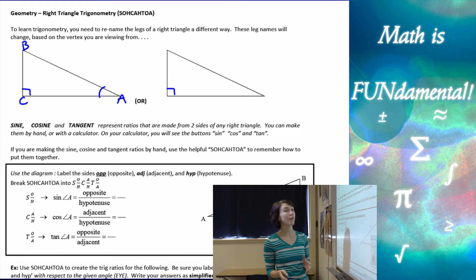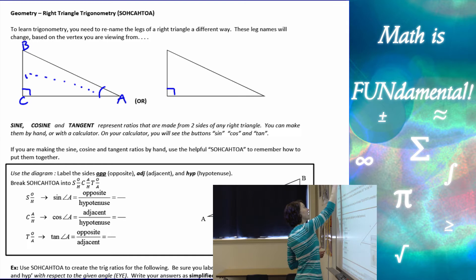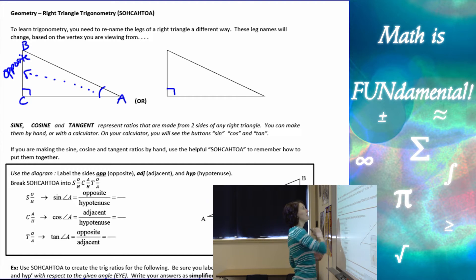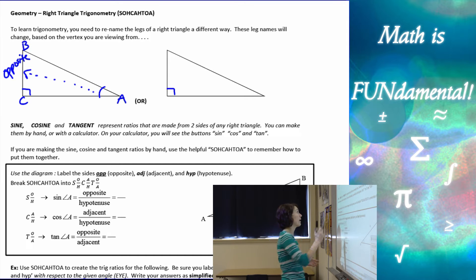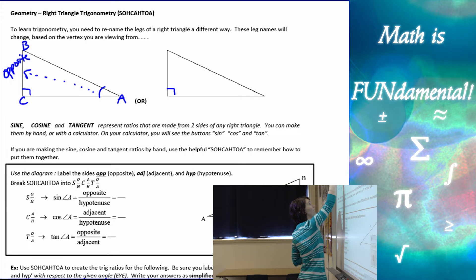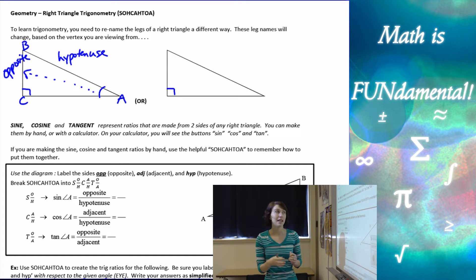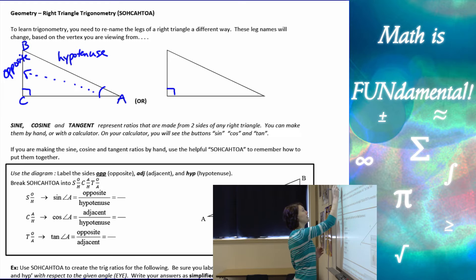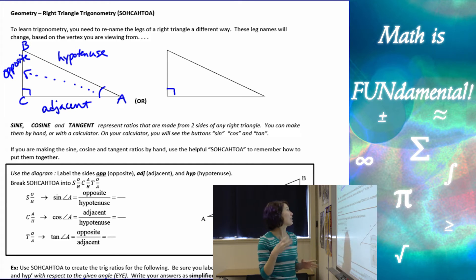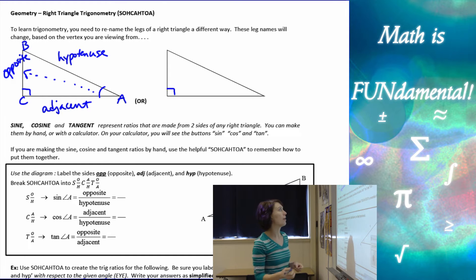If we're looking from angle A, the side across from it is what we're going to call the opposite side — it's opposite from our angle of reference. The right angle is always across from the hypotenuse, so that doesn't change. And then the other leg that's next to our angle of reference is called our adjacent side. So familiarize yourself with these terms: opposite, adjacent, and hypotenuse.